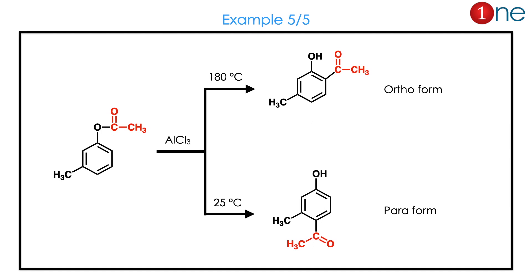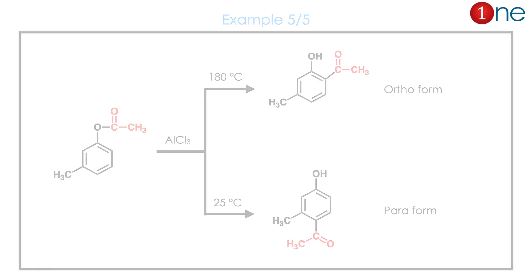In the next example, you have a meta-substituted product. Since the steric loading is less, you have a controlled product — this is a very classical case. At high temperature you get the ortho form; at low temperature you get the para form. Like our HOT principle: high temperature gives ortho, thermodynamically controlled.